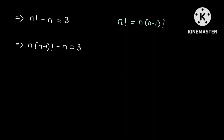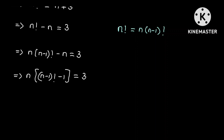Since N is common on the left-hand side, we can factor it out: N × [(N-1)! - 1] = 3. From here we can see that the product of these two numbers is 3. Since 3 is a prime number, there are only two possibilities: 3 × 1 or 1 × 3.